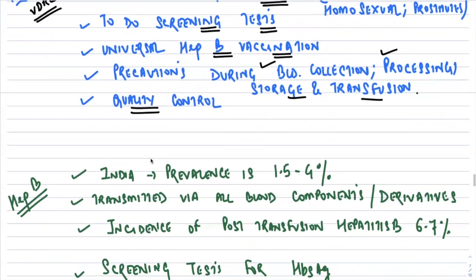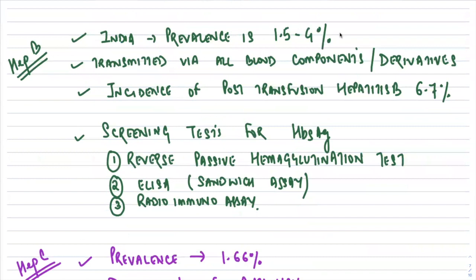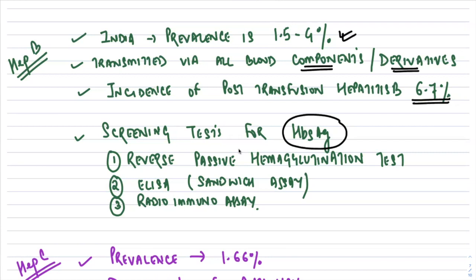Regarding hepatitis B: prevalence in India is around 1.5–4%. It is highly infectious and transmitted via all blood components and blood derivatives. The incidence of post-transfusion hepatitis is around 6.7%, which is very high. Screening tests for HBsAg include the reverse passive hemagglutination test, ELISA (the standard test), and radioimmunoassay.